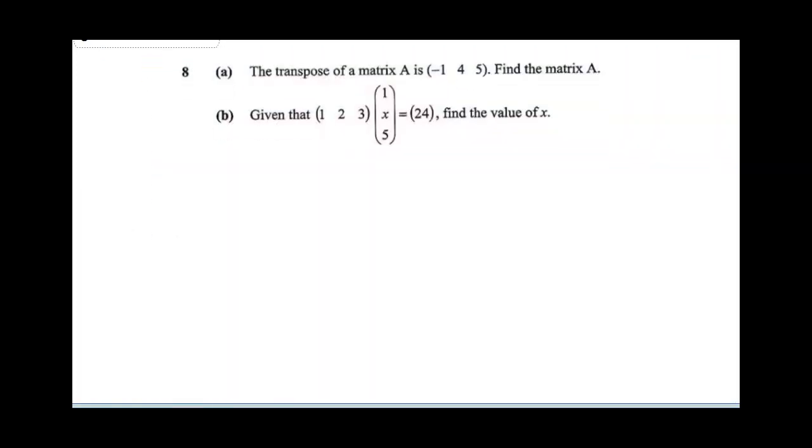Question 8 says the transpose of a matrix A is minus 1, 4, 5. If the transpose is minus 1, 4, 5, find A. If A transpose is equal to minus 1, 4, 5, therefore, A will be just invert the matrix, let the rows become the column and the column becomes the row. It's going to be minus 1, 4, and 5.